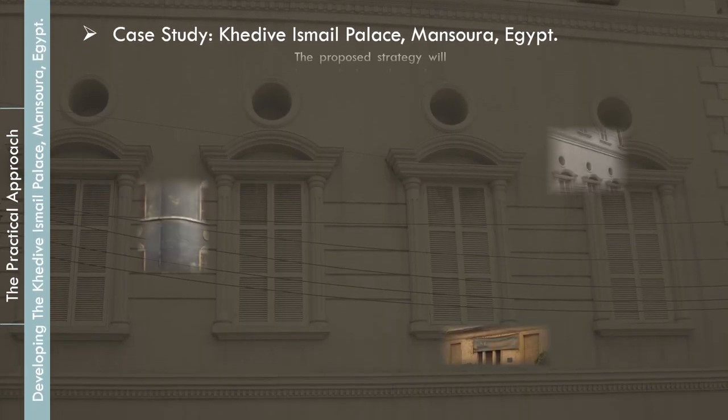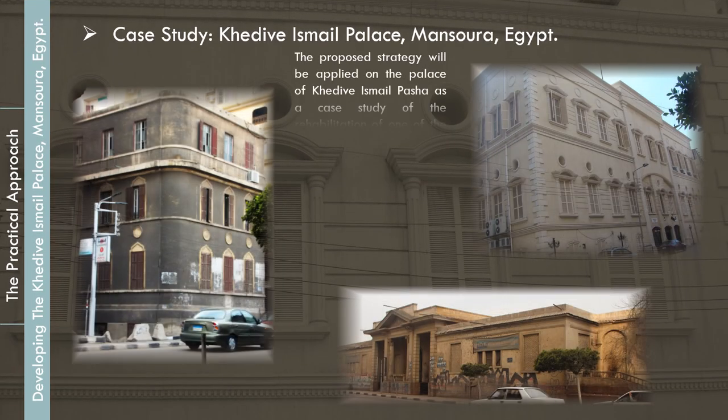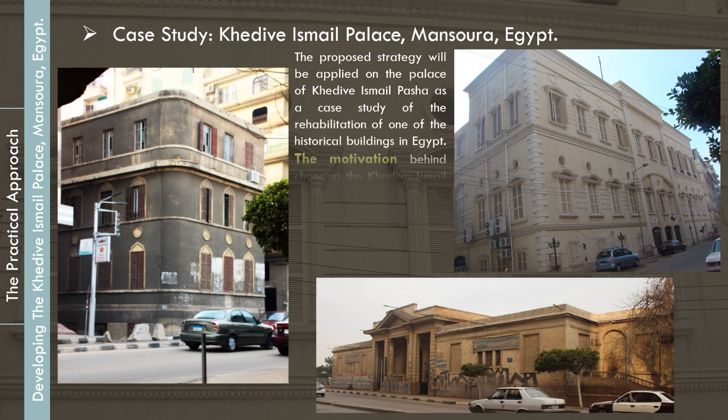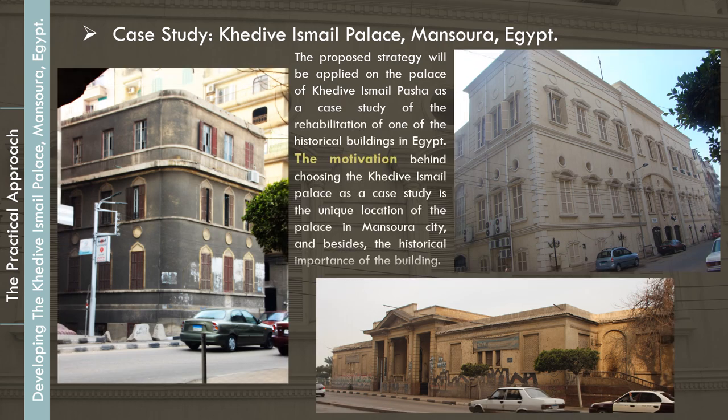The proposed strategy will be applied to the Palace of Khadiva Ismail Pasha as a case study of the rehabilitation of one of the historical buildings in Egypt. The motivation behind choosing the Khadiva Ismail Palace is its unique location in Mansoura City and the historical importance of the building.